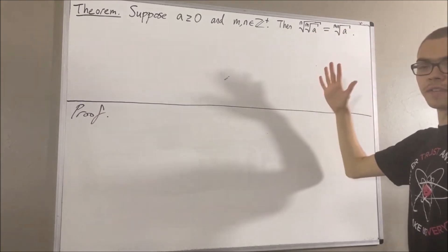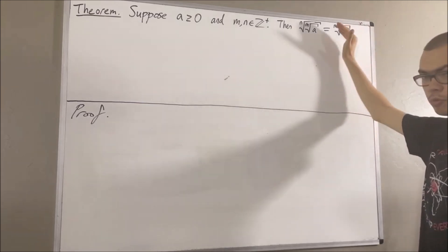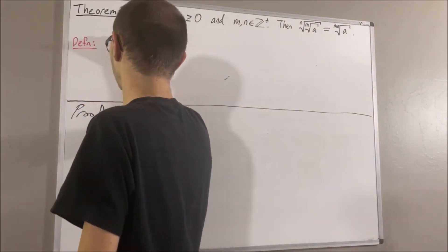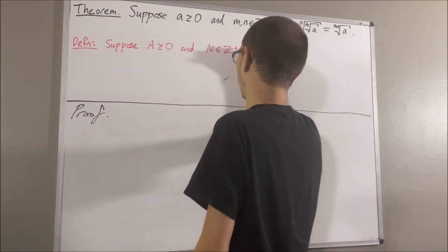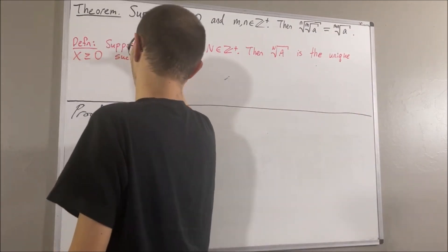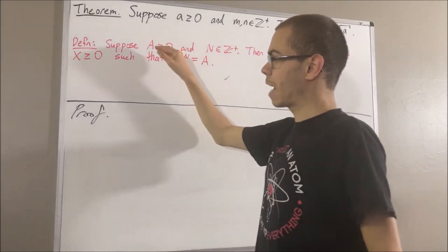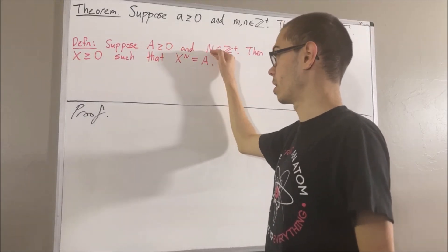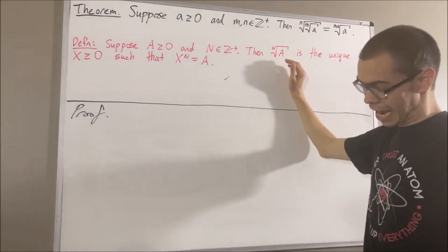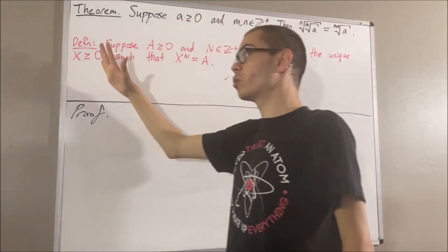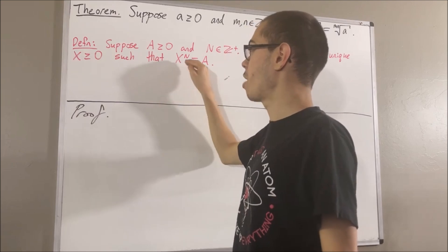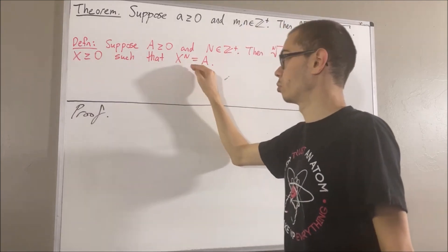Now, let's first remind ourselves the definition of the nth root of a number. Our definition is as follows: suppose a is a real number greater than or equal to zero, and n is a positive integer. Then the nth root of a is the unique real number x greater than or equal to zero, which has the property that x to the power of n is equal to a.